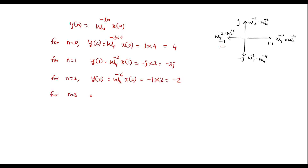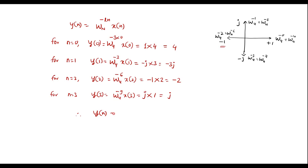For n equal to 3, y of 3 is equal to W_4 to the power minus 3 times 3, which is W_4 to the power minus 9. From the twiddle factor table, W_4 to the power minus 9 equals +j. Since x of 3 is 1, y of 3 equals j. Therefore, the sequence y of n is equal to {4, -3j, -2, j}. This is the required output sequence y of n.